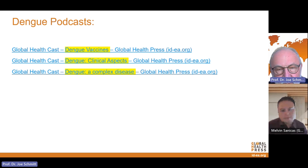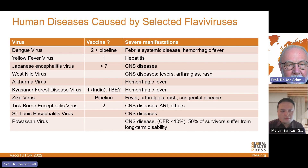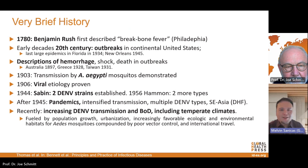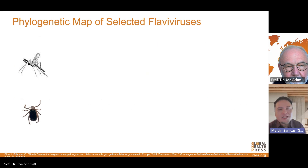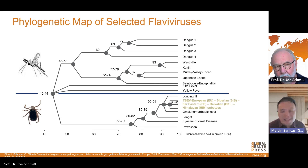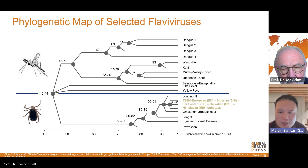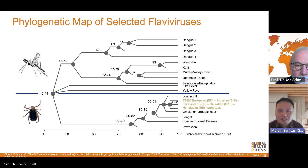Melvin, any questions on the summary of dengue viruses and dengue disease? Melvin responds: This was excellent, Professor. Just a question on flaviviruses in general, especially the mosquito-transmitted ones — there are a lot of them and most don't have vaccines yet. In your opinion, should these be added to the list of priority pathogens on the global research agenda?